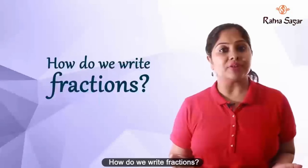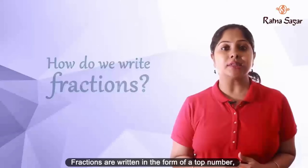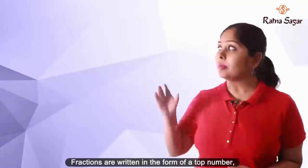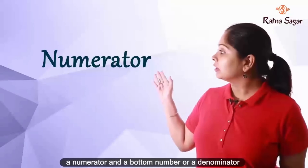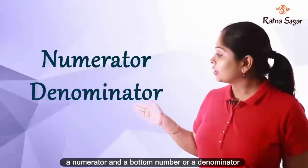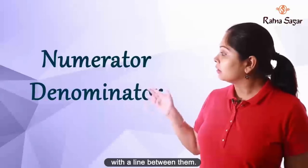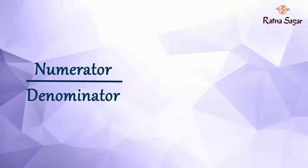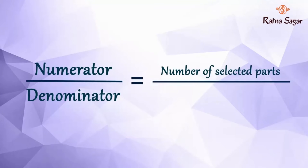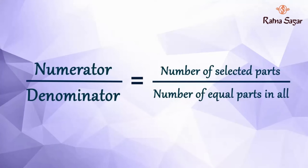How do we write fractions? Fractions are written in the form of a top number or numerator, and a bottom number or denominator, with a line between them. Numerator over denominator equals the number of selected parts over the number of equal parts in all.